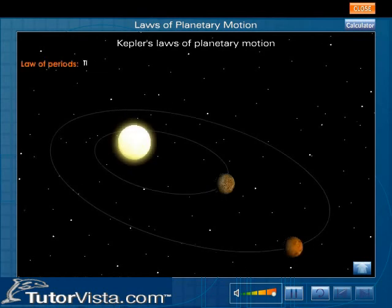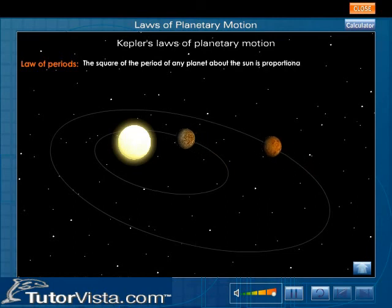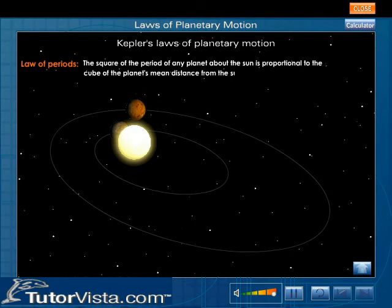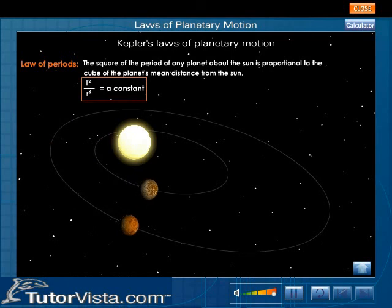Law of Periods: The square of the period of any planet about the sun is proportional to the cube of the planet's mean distance from the sun. That is, T²/R³ is the same for all planets, where T is the time period of the planet and R is the distance of the planet from the sun. T and R are different for different planets.